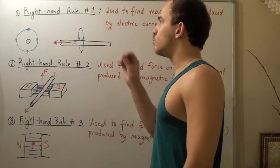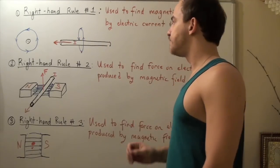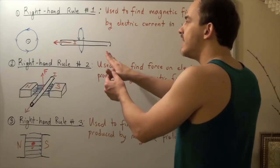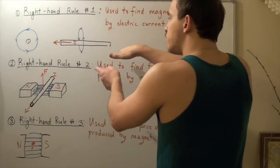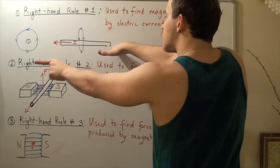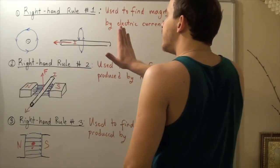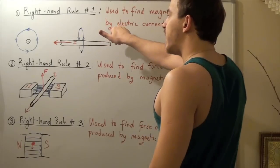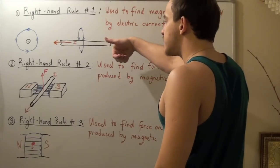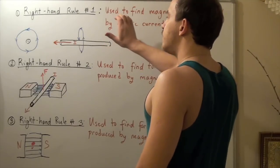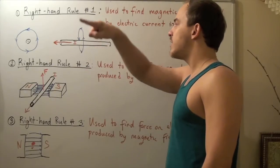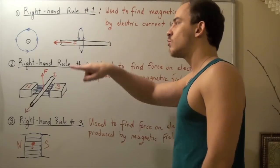To use right-hand rule number one, I take my right hand and orient my thumb in the direction of my current. So if my current is going this way, I orient my thumb pointing in the same direction. Then I simply grab my wire, and the motion that my hand makes is the same motion that my magnetic field makes. That means my magnetic field will make concentric circles around my wire pointing in this direction.